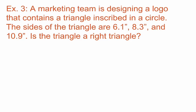So let's go ahead and use these values for A squared plus B squared equals C squared. Now looking at these values, we should see 10.9 is our biggest of the three values. So we're going to take 10.9. That's going to get substituted in for C. So we're going to have 6.1 squared plus 8.3 squared is equal to 10.9 squared.